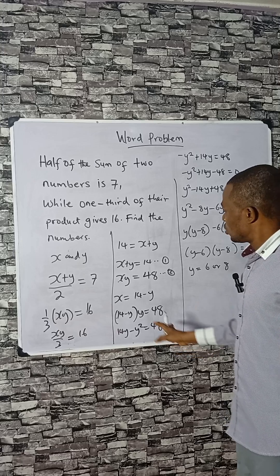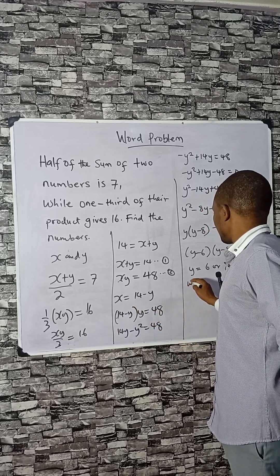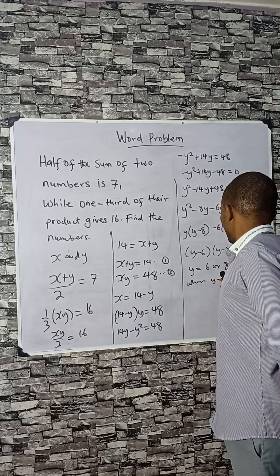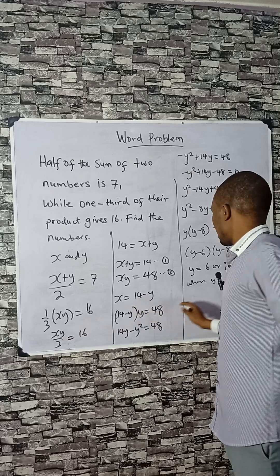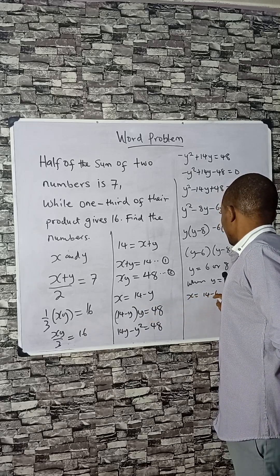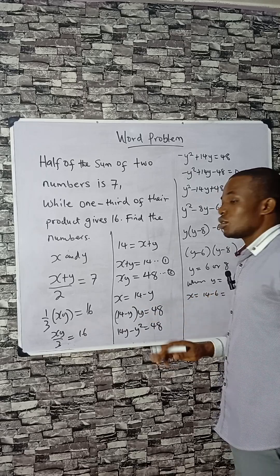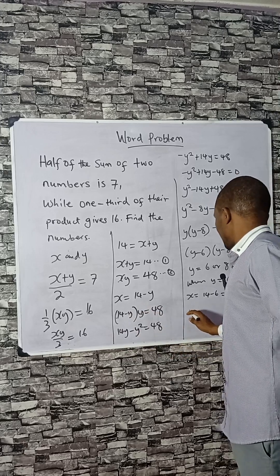But for x here, when y equals 6, x equals 14 minus 6, that is equals to 8. So the two numbers here are 6 and 8.